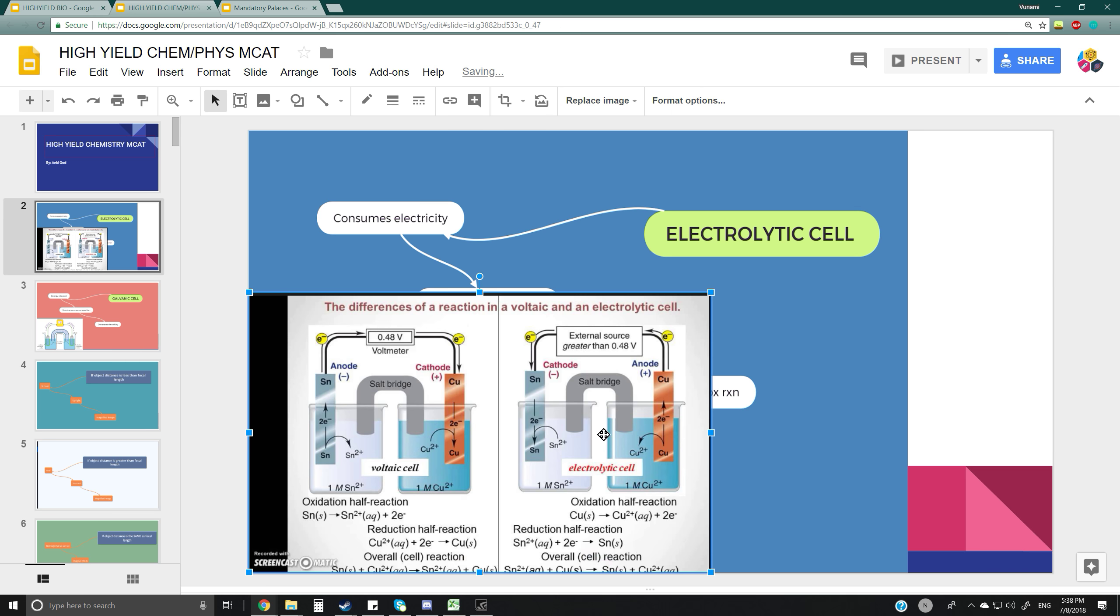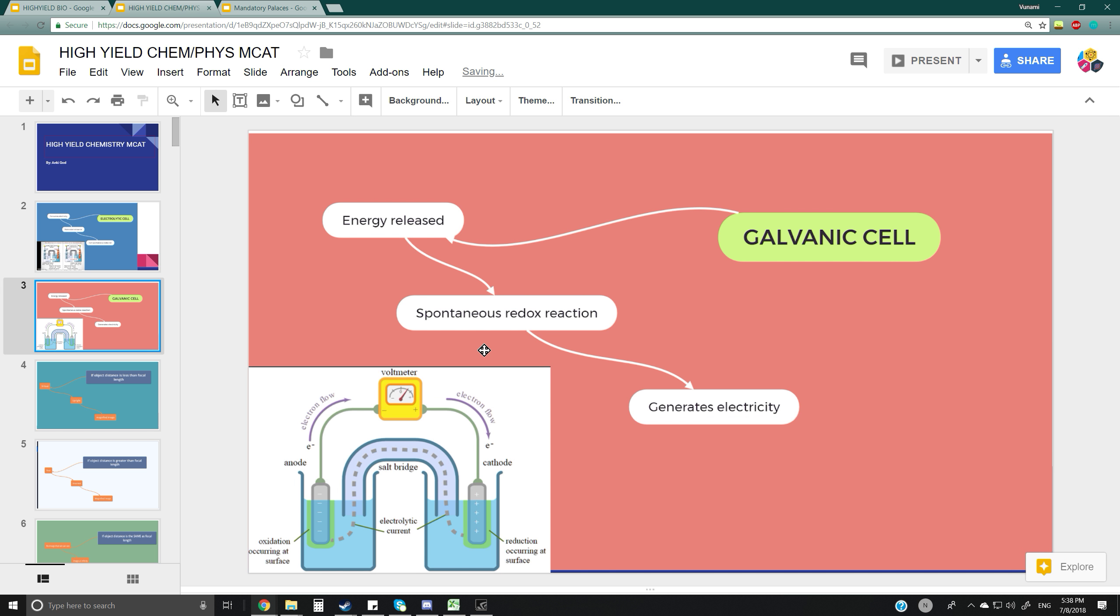In every case, electrons always flow from anode to cathode, whether it's galvanic or electrolytic. In terms of galvanic cells, energy is released. They're always spontaneous and generate electricity.